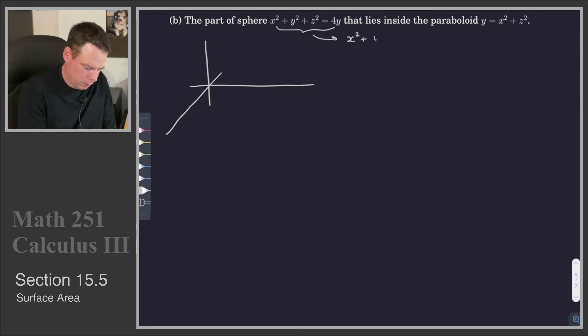x squared plus y squared minus 4y plus z squared is equal to 0. Or x squared plus, I'll complete the square here, y minus 2 all squared plus z squared. And when I completed the square I added a 4 on the left side, so I balanced it by adding a 4 on the right side. So this is a circle that has been shifted two units along the positive y axis and has a radius of 2.